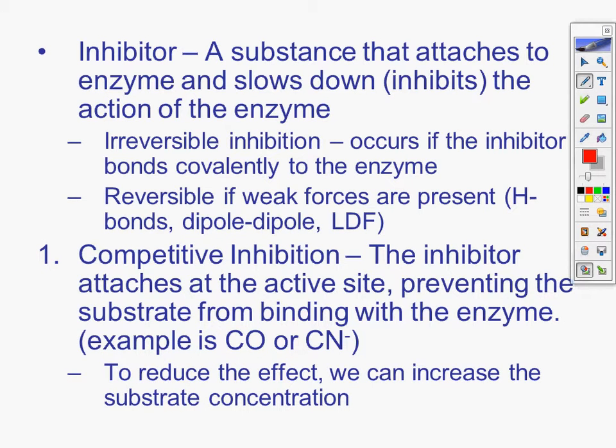Inhibitors. If you're around secondary smoke, alcohol, I'm trying to think of some inhibitors. UV light could be an inhibitor. A lot of different things can inhibit the chemical processes in your body. If you get sunburned, the chemical processes at the site you got sunburned are being inhibited by the UV damage that was done until it gets fixed. A substance that attaches to the enzyme and slows down or inhibits the action of the enzyme. Irreversible inhibition occurs if the inhibitor bonds covalently to the enzyme, meaning it has no more active site. And we do that with certain cancer cells and different things to try to stop the action of the cancer. Reversible if weak forces are present: hydrogen bonds, dipole-dipole, and London dispersion. Irreversible covalently bonded. Reversible if it's just the intermolecular forces.